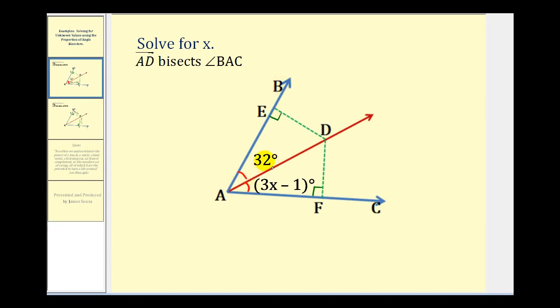So if angle BAD measures 32 degrees, the measure of angle DAF must also be 32 degrees. So we can set up an equation to solve for x. Three x minus one must equal 32.